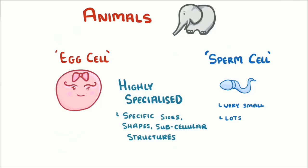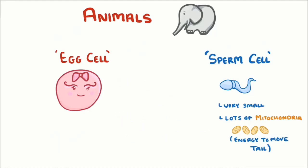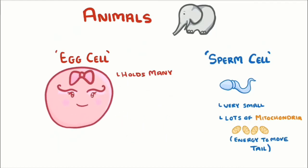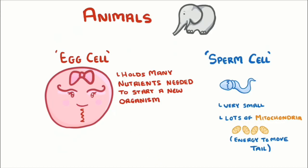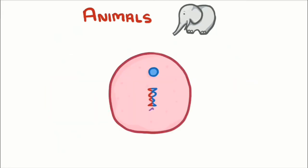The sperm cell is very small; its only function is to transport DNA from the father. However, it does have lots of mitochondria to provide the energy it needs to move its tail. The egg cell, meanwhile, is much larger as it holds many of the nutrients needed to start a new organism. Importantly, both sperm and egg cells only contain half the genetic material of a normal cell, so that once they combine, the resulting cell will have the normal amount of DNA.